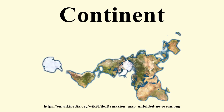By convention, continents are understood to be large, continuous, discrete masses of land, ideally separated by expanses of water. However, many of the seven most commonly recognized continents identified by convention are not discrete land masses separated completely by water.